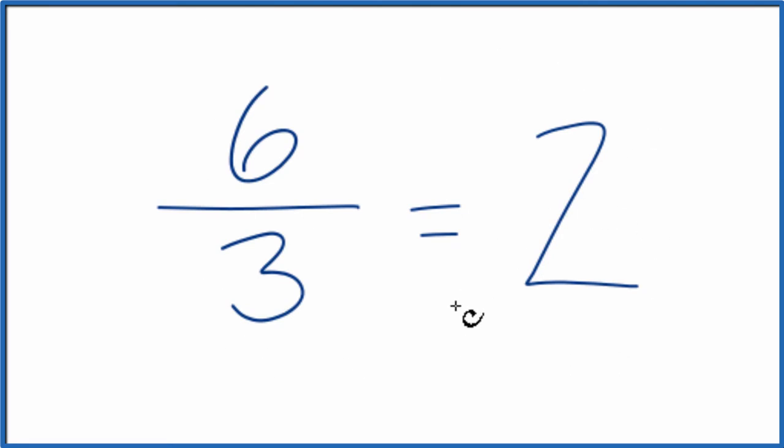And these have the same value. If you divide 6 by 3, you get 2. So it's the same number, it's just we're writing it in a different format. Instead of an improper fraction where the top, the numerator, is bigger than the denominator, we've written it as a whole number.